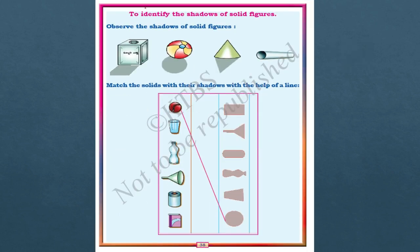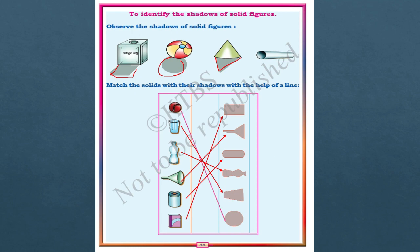To identify the shadows of solid figures — you can see these are the solid figures and their shadows are shown here. You have to match them: glass matches its shadow, then bottle, then a can. This completes the chapter on shapes and spatial understanding.